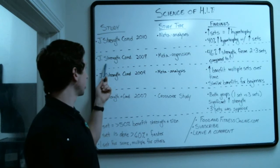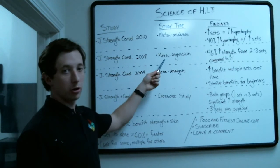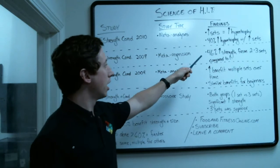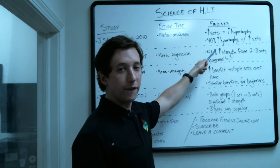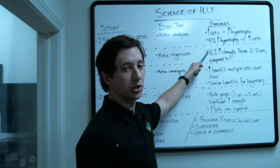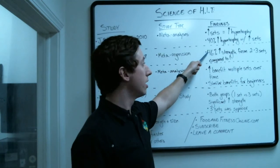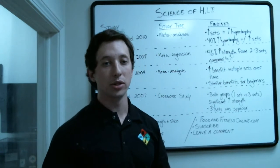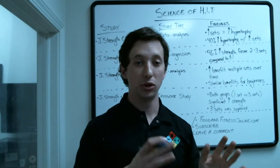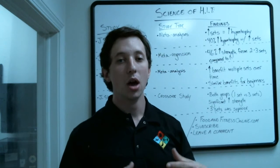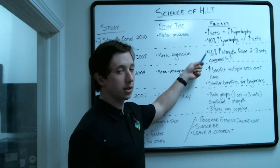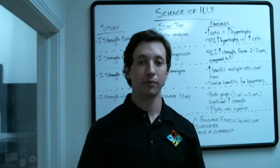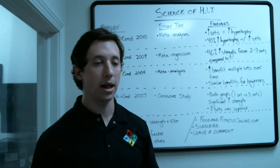And the second study I looked at, which was a meta-regression, is like a meta-analysis, done in the Journal of Strength and Conditioning in 2009. This one looked at strength, and they found that there was a 46% increase in strength from two to three sets compared to one. In this study, there was not a significant difference between doing two sets or three sets. So just doing more than one set got 46% more benefit in the strength training.